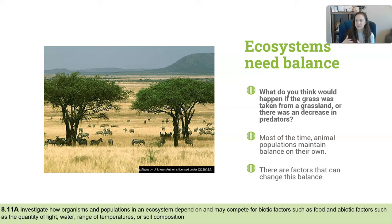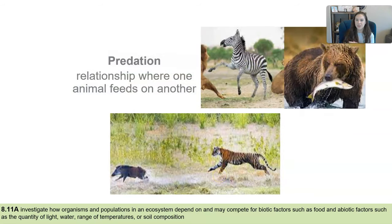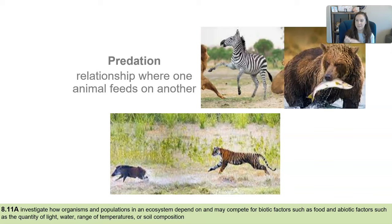Most of the time animal populations are going to maintain this balance on their own. However, there are some factors that can change this balance. One of which we know is predation — where one animal feeds on another. We talked about predators and zebras, but also in aquatic ecosystems, removing bears from that population would have lasting effects on the fish population. Here we have a tiger chasing a wild pig — wild pigs tend to be invasive and procreate very quickly, and having a tiger keep that population in check is essential for the balance of the ecosystem.